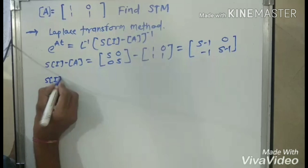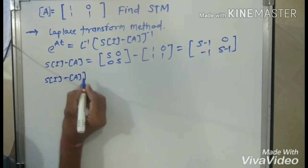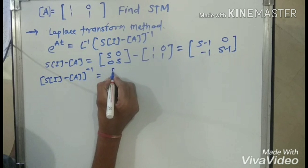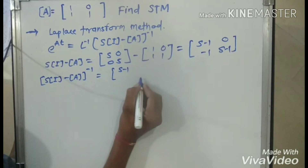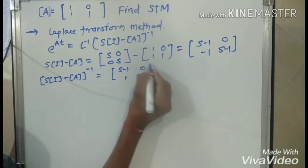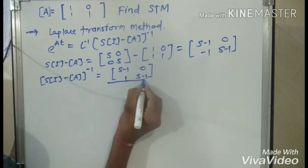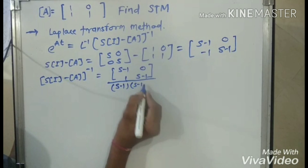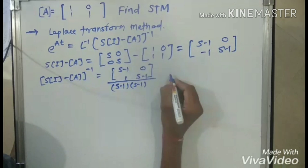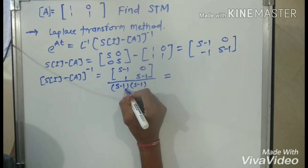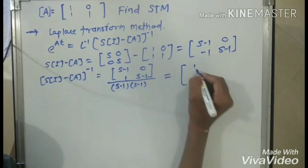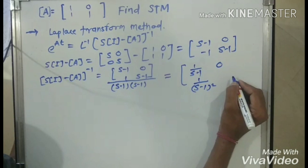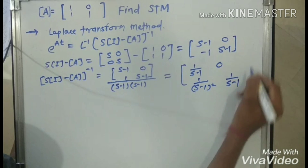Now computing (sI minus A) inverse equals adjoint divided by determinant. The adjoint is [[s-1, -1],[0, s-1]] and the determinant is (s-1)(s-1) minus 0, equal to (s-1) squared. Dividing each term gives: 1 divided by (s-1) in the (1,1) position, -1 divided by (s-1) squared in the (1,2) position, 0 in the (2,1) position, and 1 divided by (s-1) in the (2,2) position.